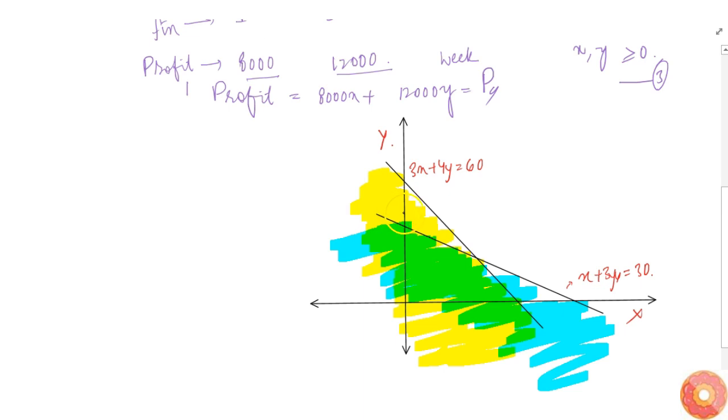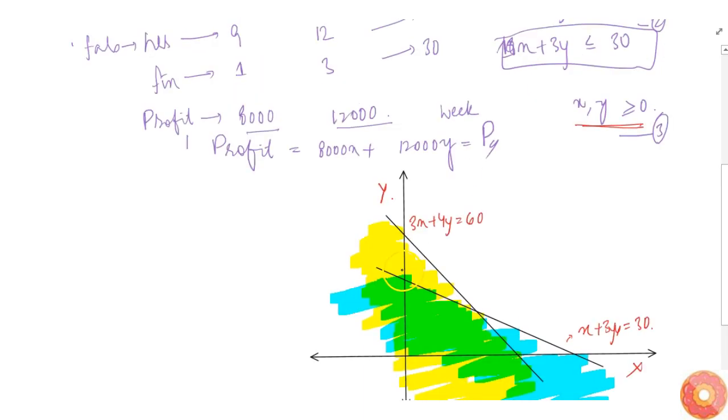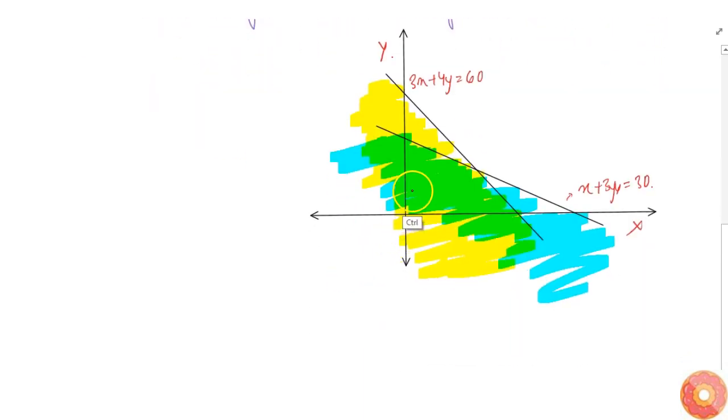This region must be in the first quadrant since X and Y must be greater than zero. So the region is bounded in between. This is point A, this is O, this is B, this is C. The region inside is what we are interested in. This is region R which satisfies the given constraints.